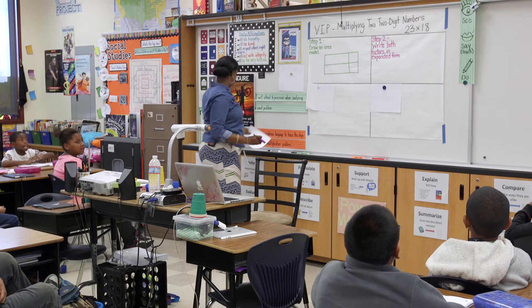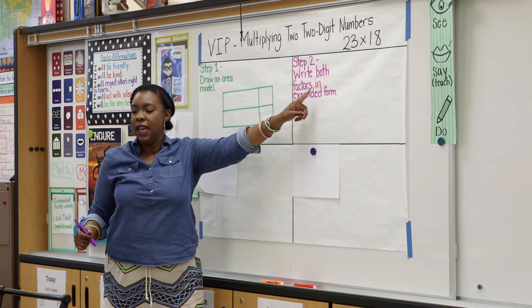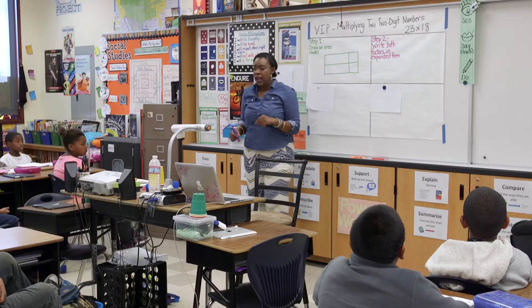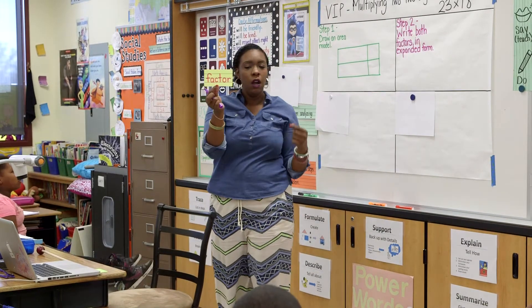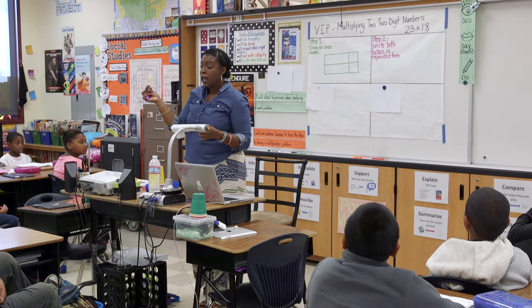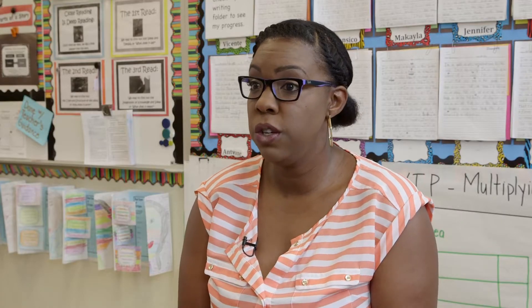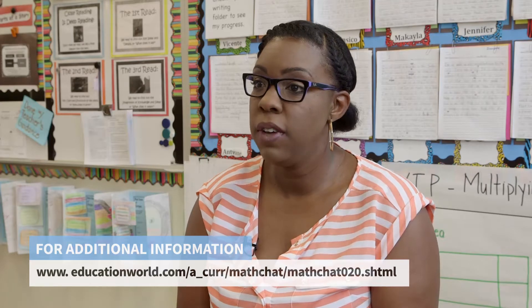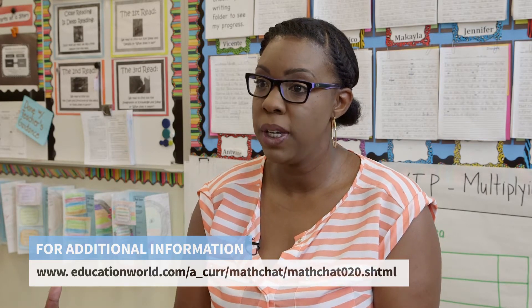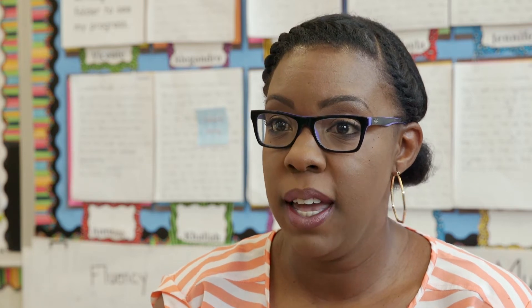Step number two is to write both factors in expanded form. A factor is a visual instruction plan — a Fred Jones strategy used to make the steps of an activity clear to students. A lot of times when you're giving instructions or a process for doing something, the steps are hidden in the problem itself. A visual instruction plan makes those steps visible to students at all times.